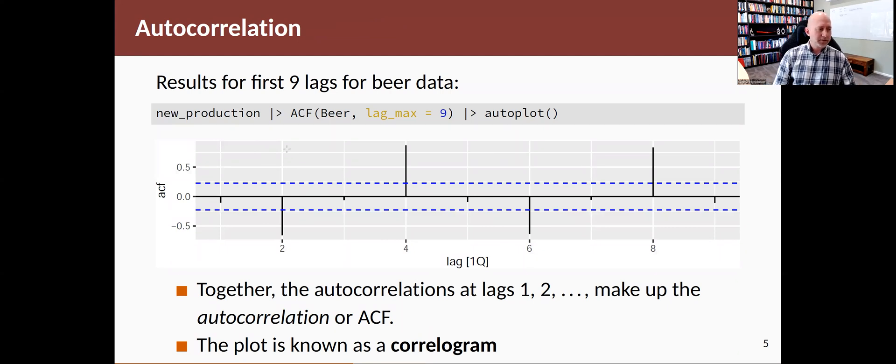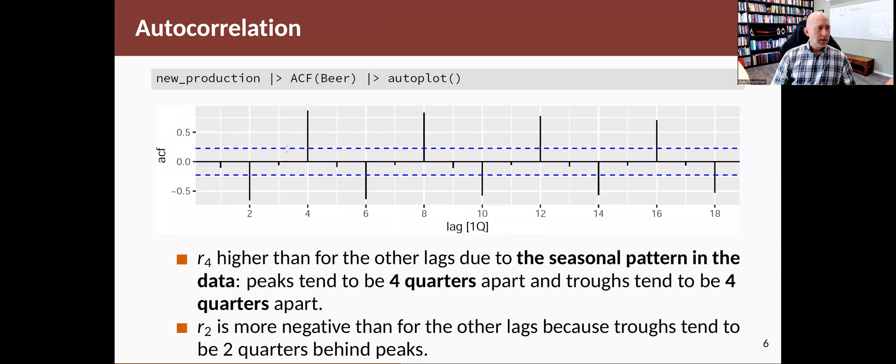When you plot them all together like this, we sometimes call it a correlogram. It's a plot of the correlations at different lags. If I leave off the lag max equals nine, it'll choose a suitable number of correlations to plot. In this case, it's plotting 18. And you'll see that at the quarterly multiples of four, eight, 12, and 16, for all of those, we have strongly positively correlated values. And that's because of the seasonal pattern.